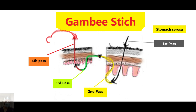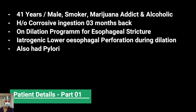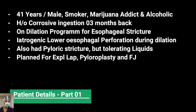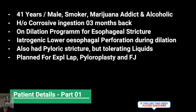Remember this configuration, and we will understand the Gambee stitch further during the live surgery demonstration in the subsequent part of this video. This patient was a 41-year-old male — a smoker, marijuana addict, and alcoholic — who had an accidental ingestion of a corrosive agent and developed a low esophageal stricture. He was on a dilatation program.